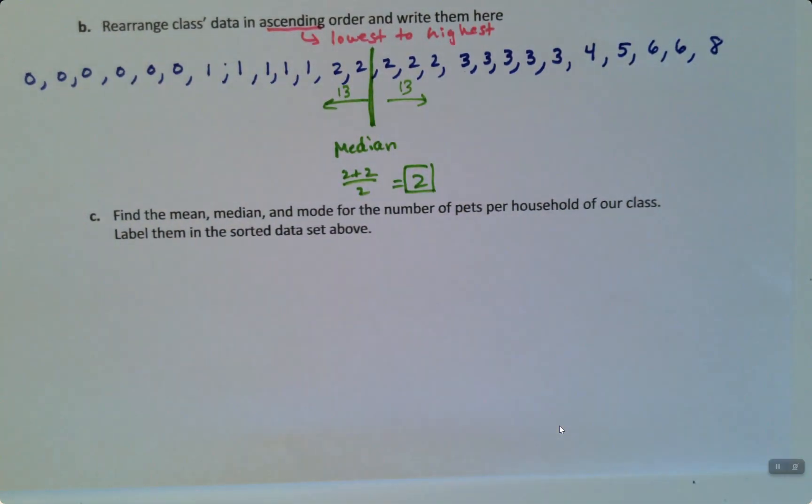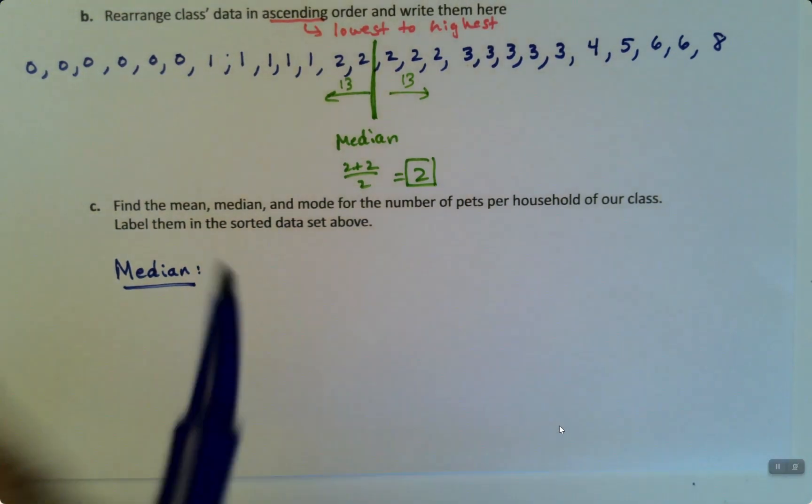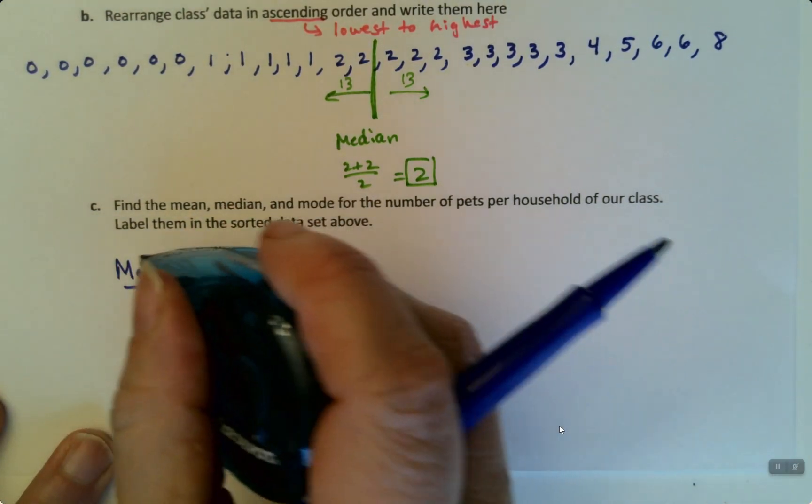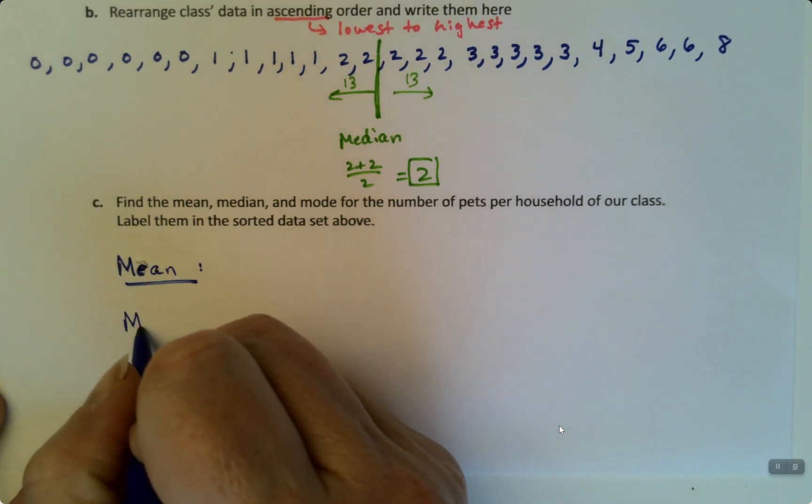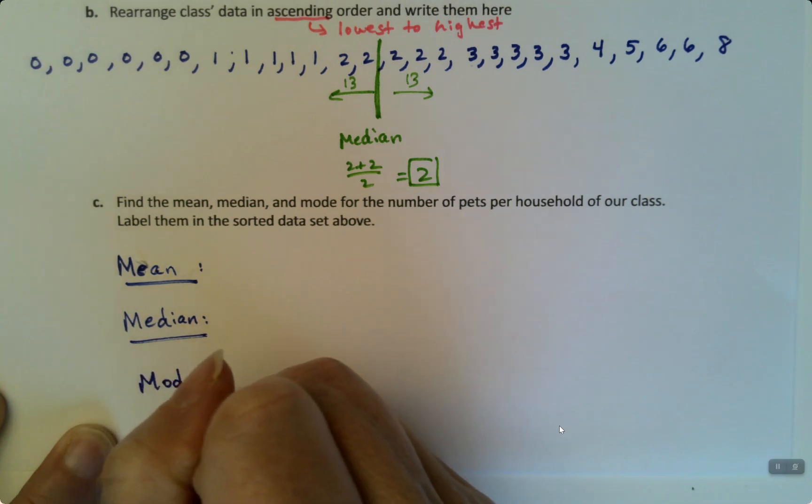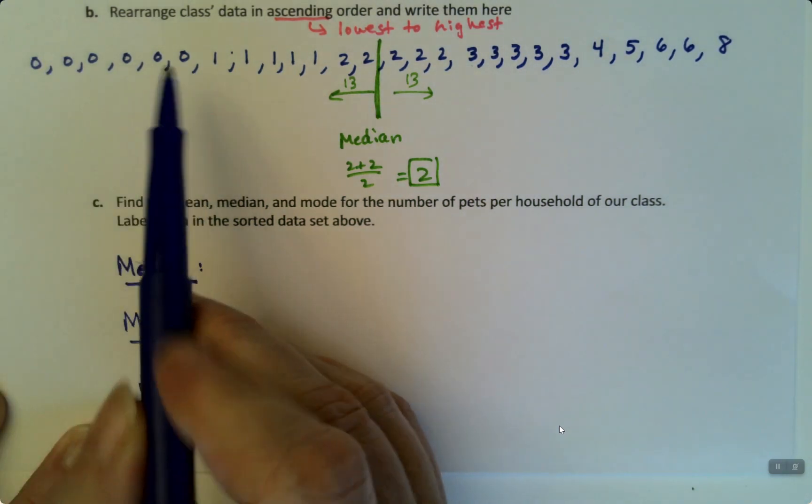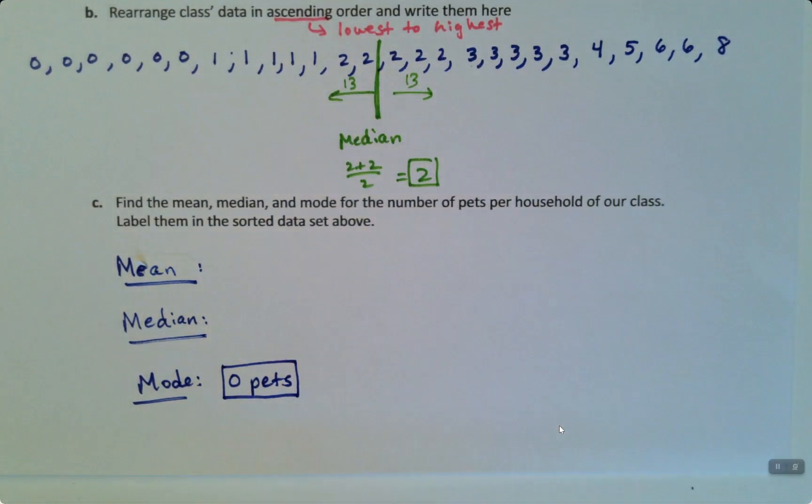Now, in general, we're not going to find the mean by hand, for sure. And the median, we don't usually find by hand. The mode, we could do right now, because the mode is the one that occurred the most often. So that's pretty easy. I like to do the mean first. All right. So mean, median, and mode. All right. Well, the mode is easy. There are more zeros than anything else. Therefore, the mode is zero pets. Zero has the highest frequency.